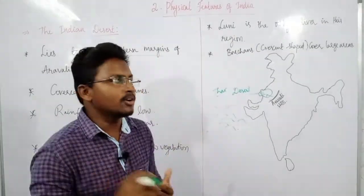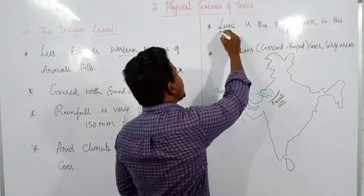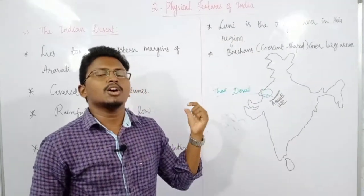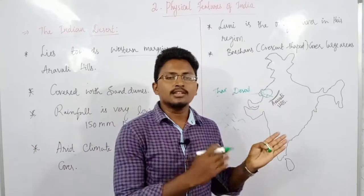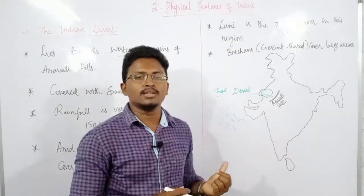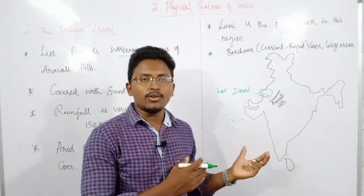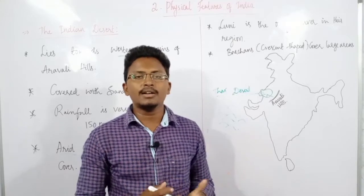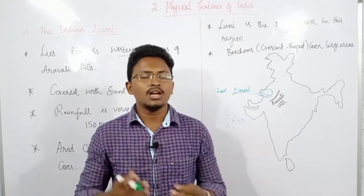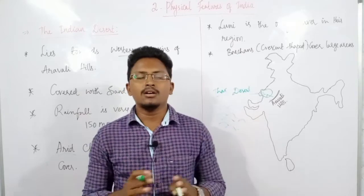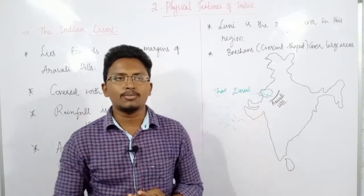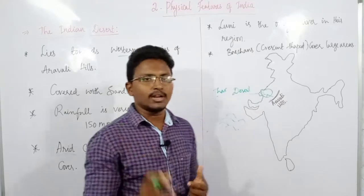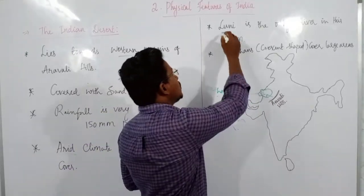The other very important feature is that the only river flowing in this region is the Luni River. Of course there are some other small streams or water bodies like canals that may flow during the rainy season, but once the rainy season gets over, those rivers stop flowing. So the only important river in this region is the Luni River.